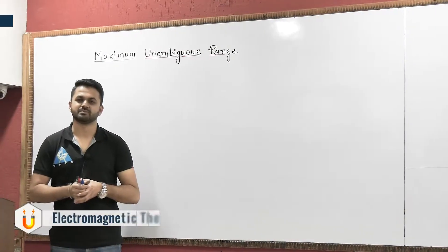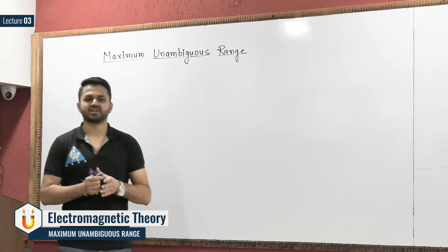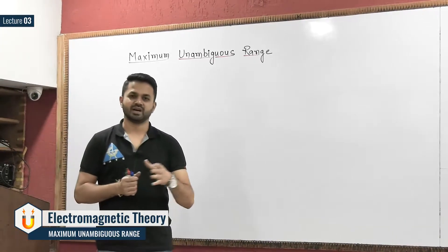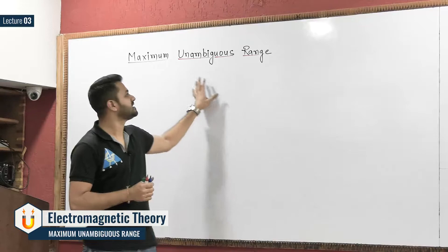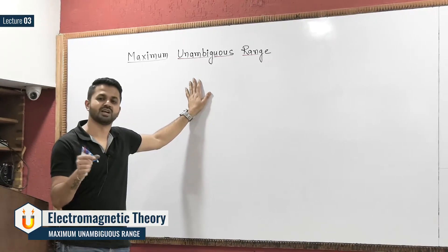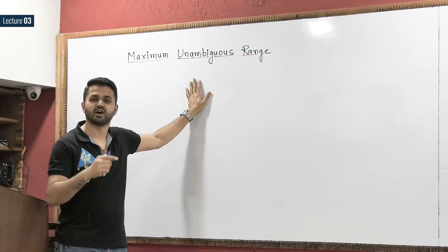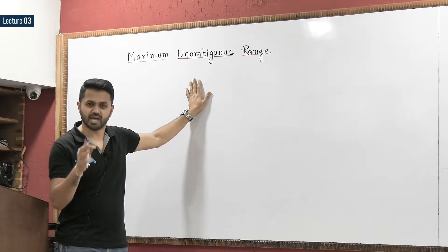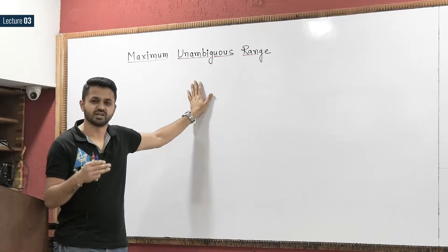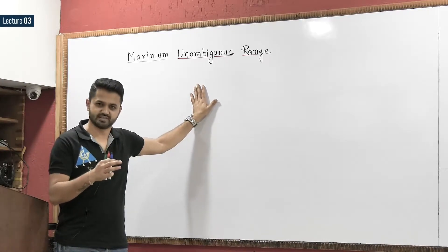The next topic is maximum unambiguous range. As we can understand from its name, we have to calculate the maximum range of the target without any ambiguity — that means there should not be any confusion while we are calculating the range of the target.